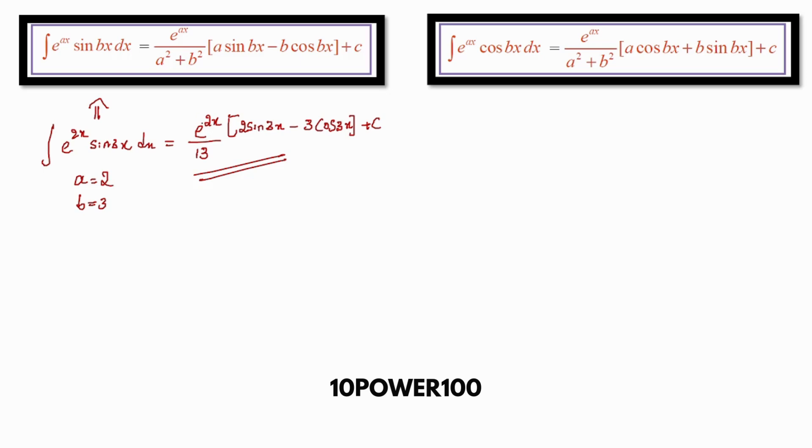Don't need to go for any other steps—directly you get the answer instead of doing by parts two times. This is the easiest method I feel. Please note this down in your notebook. If you can do this, please do it and comment this answer in the comment section: integration of e^(3x) cos(4x) dx.